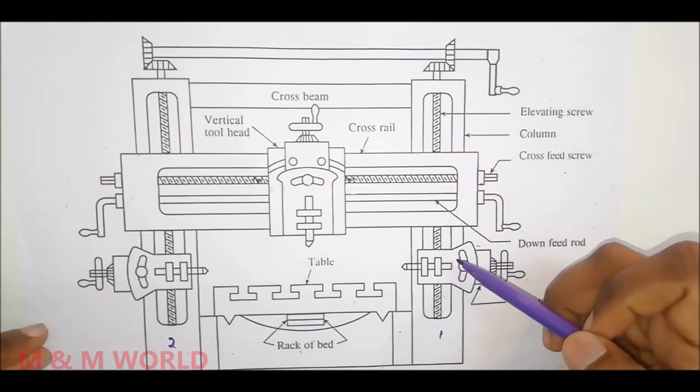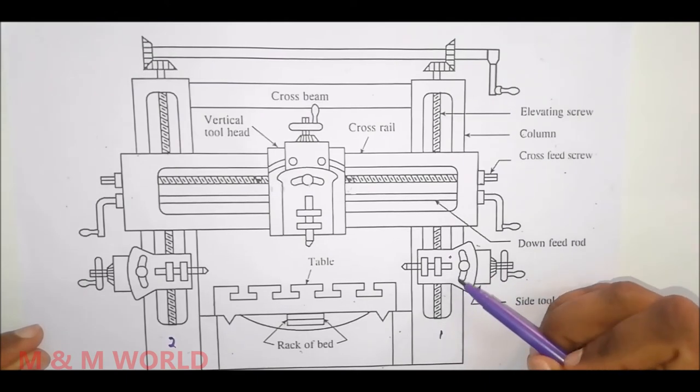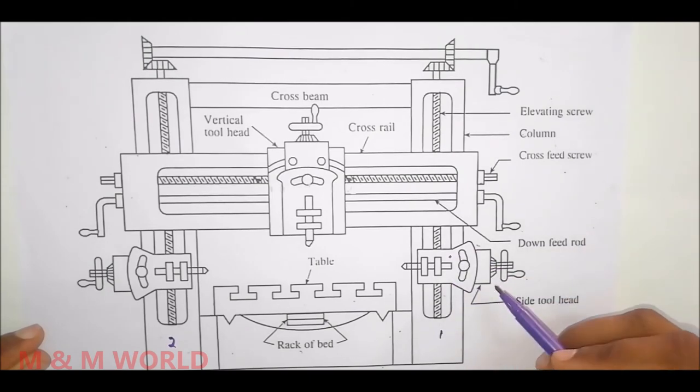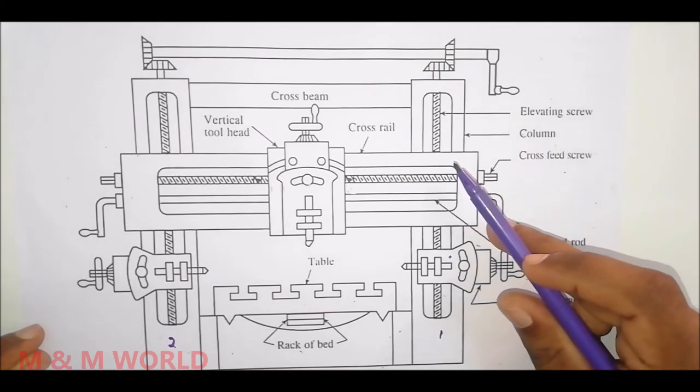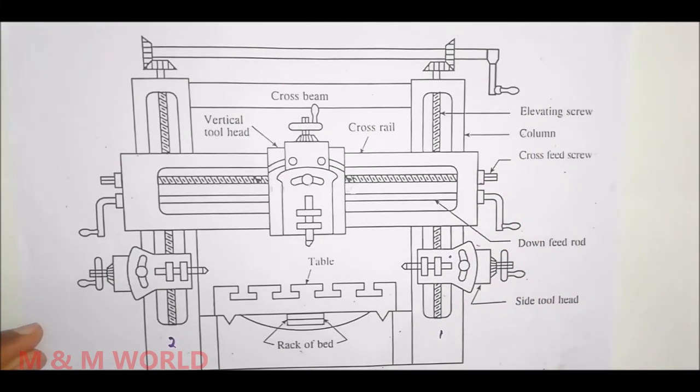The cross rail can be moved vertically through this guideway. We also have two side tool heads that slide upon this guideway. The housing encloses the cross rail, elevating screw, vertical and cross feed screw for the tool heads. This is all about housing.